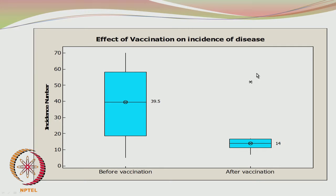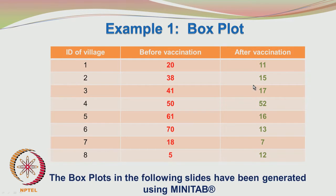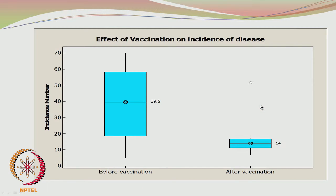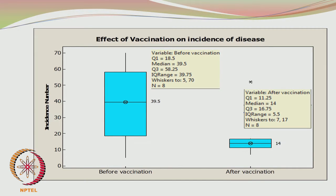Since no whisker extends beyond 1.5 times the IQR, we have an outlier at that particular point. This obviously corresponds to the value of 52 which we saw in the previous table — 52 is an unusually high number. Rather than trying to figure out the numbers with respect to the scale, you can also have the data plotted in the software.